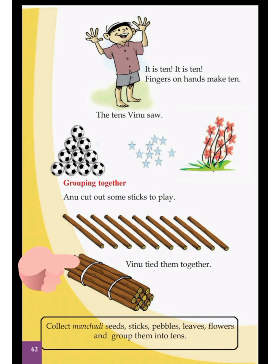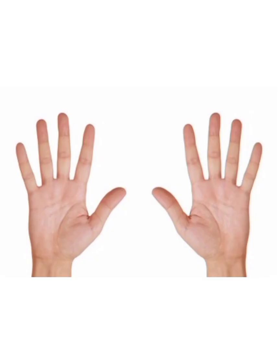Grouping together — Anu cut out some sticks to play and tied them together. That means a group of ten. Collect Manchati seeds, sticks, pebbles, leaves, and flowers, and group them into tens. Here we can see ten fingers of our two hands.